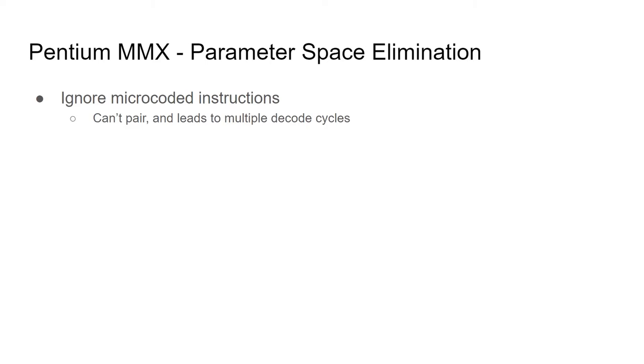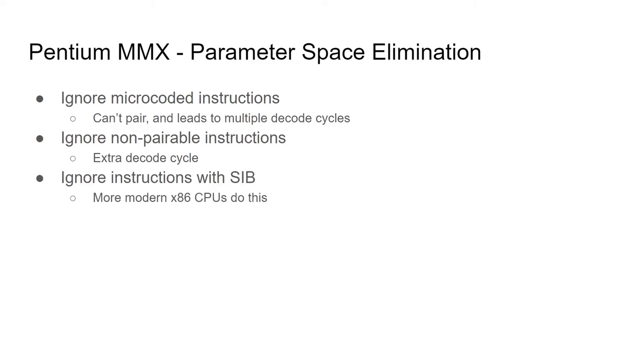To begin the elimination, we can consider a few simple restrictions to make the decoding simpler. Essentially, we are eliminating any cases that couldn't issue two parallel instructions anyway. First, we can ignore any instructions that require microcode sequencing. Those instructions will take multiple cycles and cannot pair with another instruction regardless. Second, we can ignore non-pairable instructions, in which only that specific instruction can be issued in a given cycle. Third, we can ignore any instructions with a SIB byte, since that will result in a more complex length evaluation. This was a condition that more modern CPUs imposed, requiring instructions with a SIB byte to decode in a complex decoder.